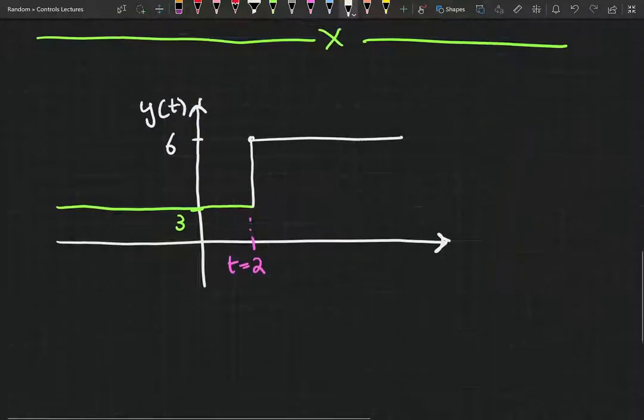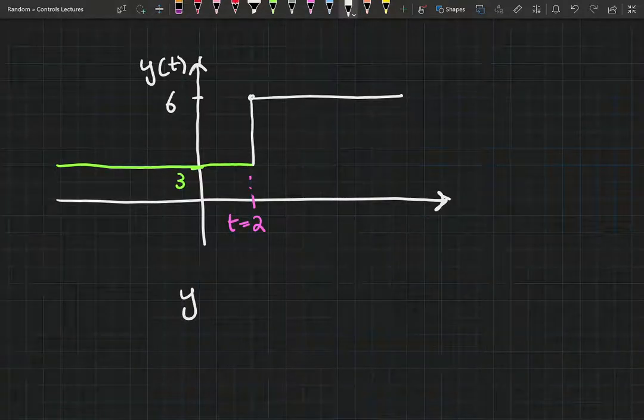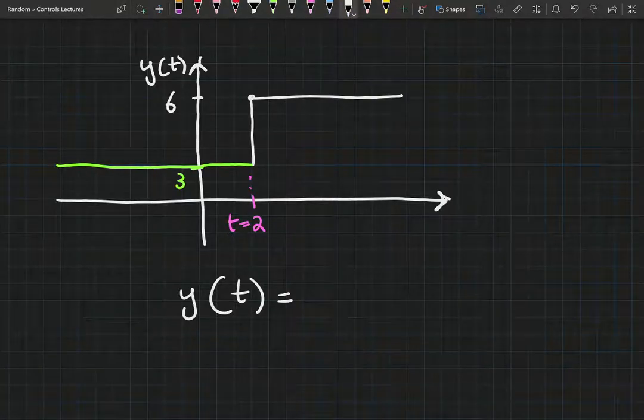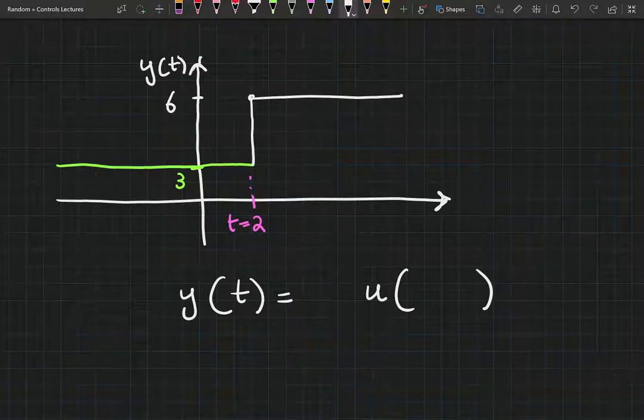How do we represent this response? Meaning, how do we write the function that represents y of t? Let's start off with a very basic. And we know that it is a step response.